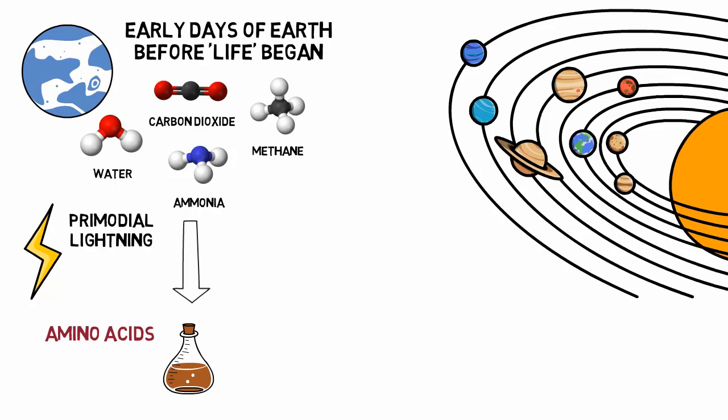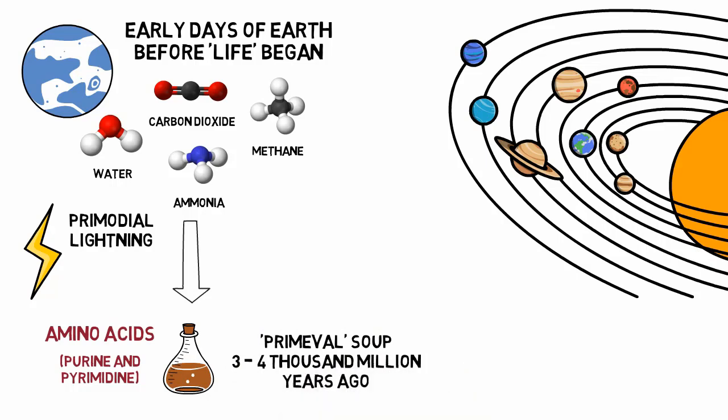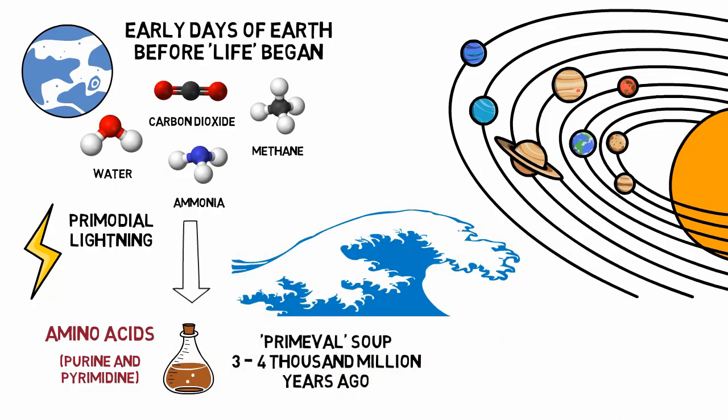Previous to these experiments, amino acids were thought to be a sign of the presence of life. Similar experiments have yielded purine and pyrimidines, building blocks of the genetic molecule DNA. This primeval soup would have been made around 3 to 4 thousand million years ago, floating in the seas and forming large molecules. At some point, a special molecule called a replicator would have been formed by accident.